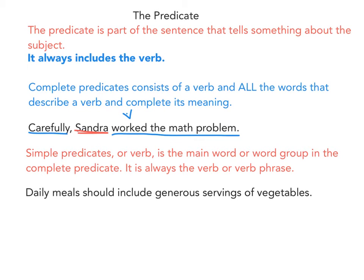The simple predicate, or the verb, is the main word or word group in the complete predicate. It is always the verb or verb phrase. A simple predicate could be a single verb or a verb phrase. Going back to our sentence: 'Carefully, Sandra worked the math problem.' The word 'worked' is the simple predicate or the verb.